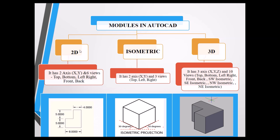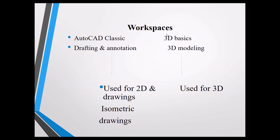In 2D, there are two axes and six views: top, bottom, left, right, front, and back. By default, we draw on the top view. In Isometric, there are two axes and three views: top, left, and right, with an inclination angle of 30 degrees. In 3D, there are three axes and 10 views: top, bottom, left, right, front, back, and four isometric views — southwest, southeast, northwest, and northeast isometric.